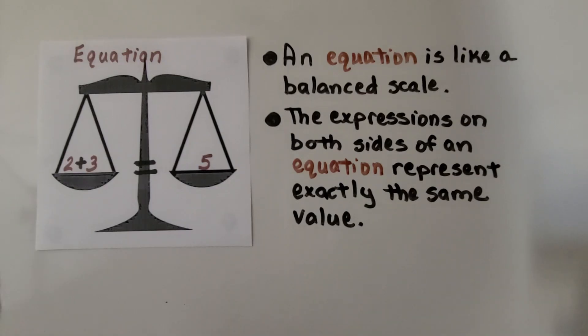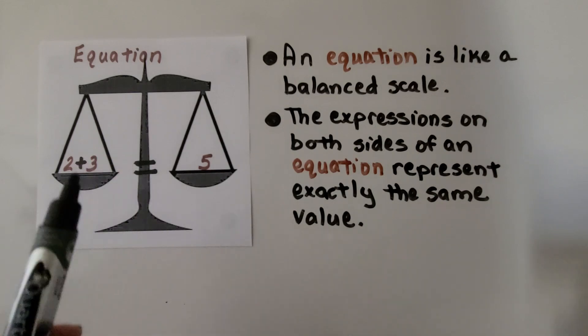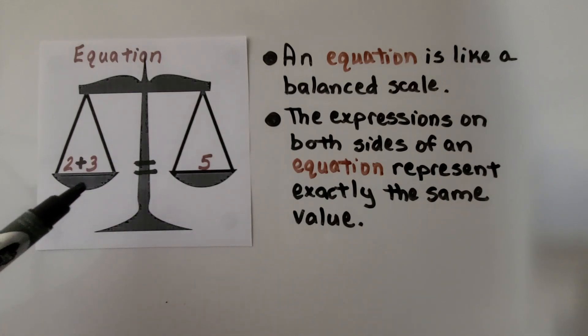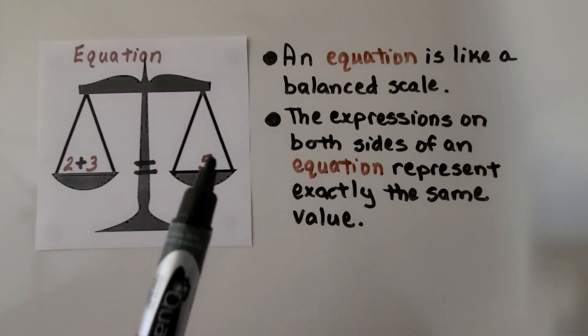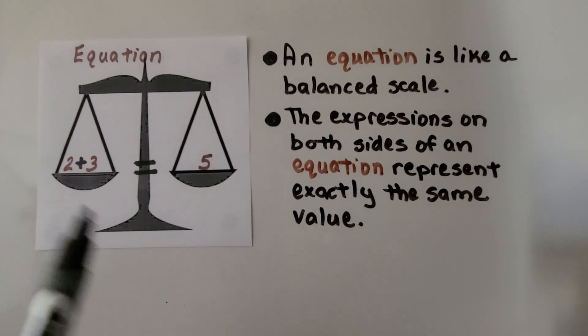An equation is like a balanced scale. One side is not going down more than the other. It's completely balanced. They're even. And the expressions on both sides of the equation represent exactly the same value. Two plus three is five and five is five. It's balanced.